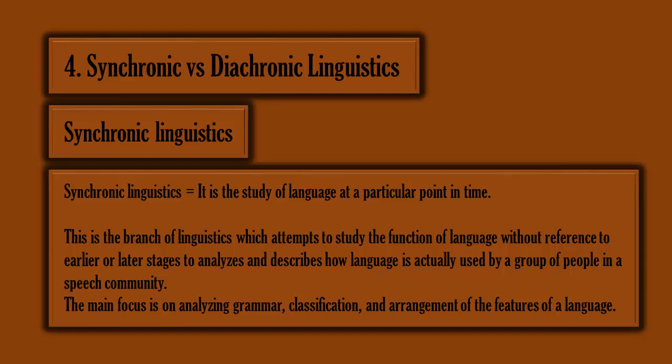The next and last topic in this lecture is synchronic versus diachronic linguistics — a theoretical dichotomy about language analysis. Saussure preferred synchronic linguistics over diachronic linguistics. Synchronic linguistics is the study of language at a particular point in time. It is the branch of linguistics which attempts to study the function of language without reference to earlier or later stages, analyzing and describing how language is actually used by a group of people in a speech community.